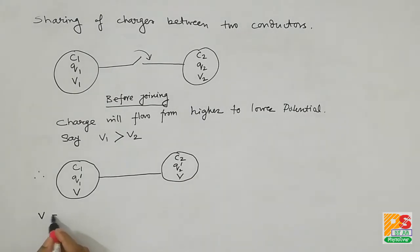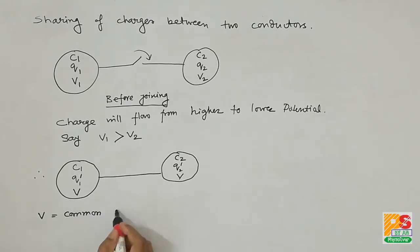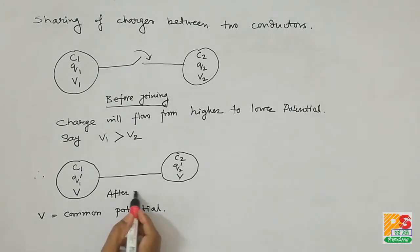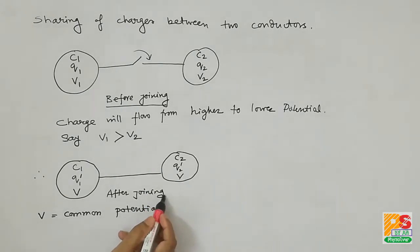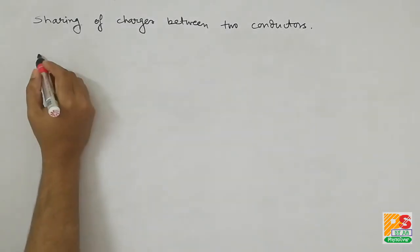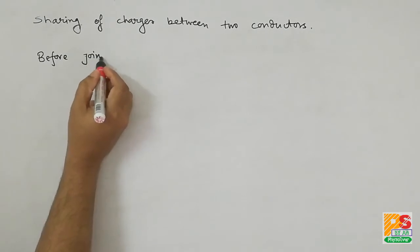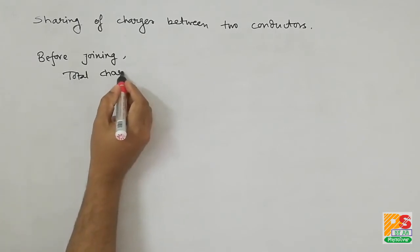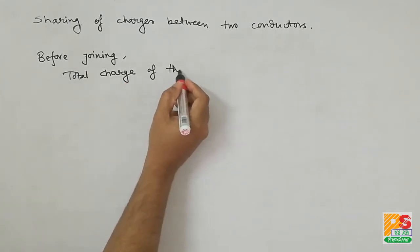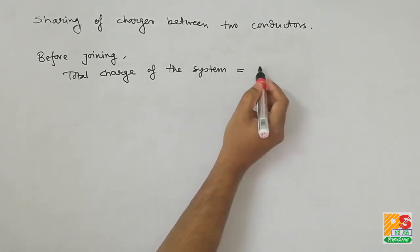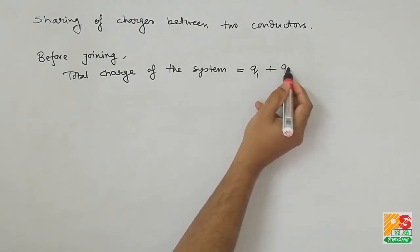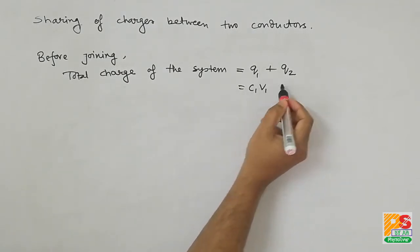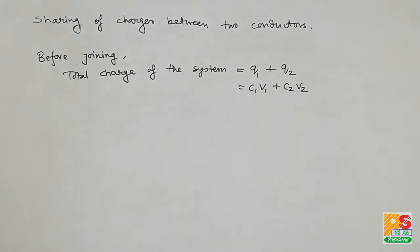Finally, the potential of both spheres should be equal. Suppose that common potential is V. The charge on the first sphere becomes Q1 dash and on the second sphere becomes Q2 dash — this is the situation after joining. To find the common potential, we use the principle of conservation of charge. Before joining, the total charge of the system is Q1 plus Q2, where Q1 equals C1V1 and Q2 equals C2V2.